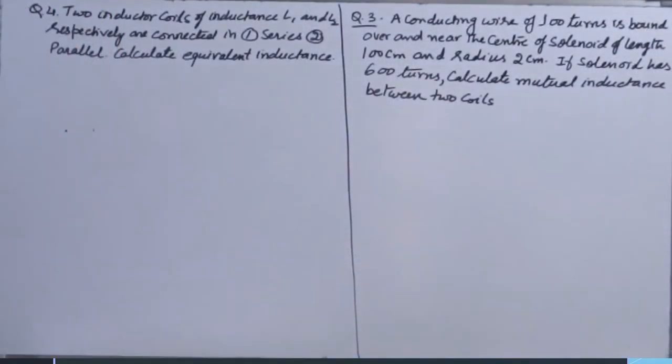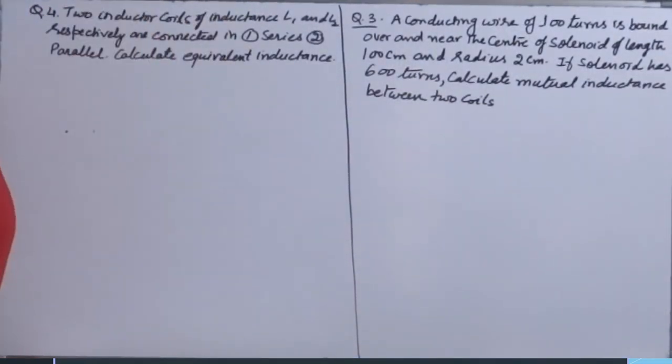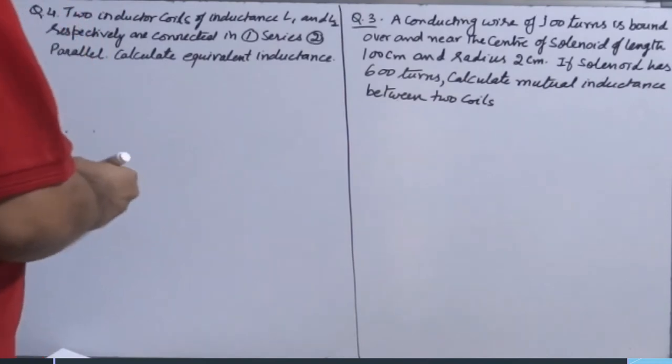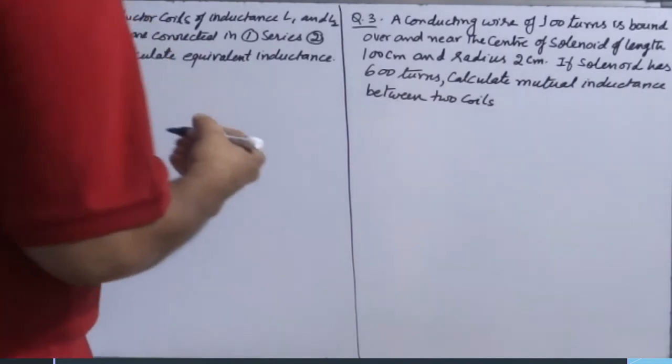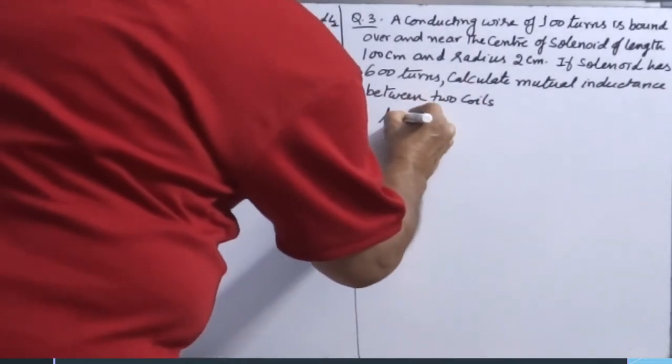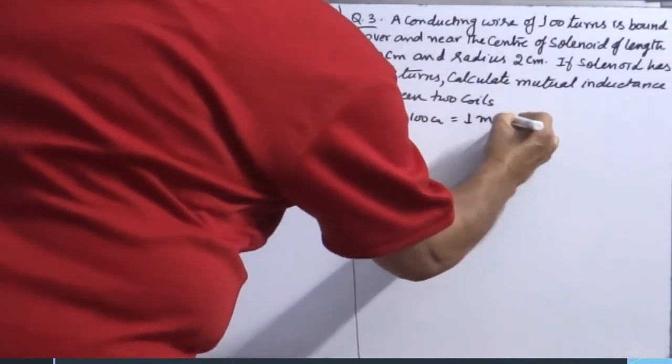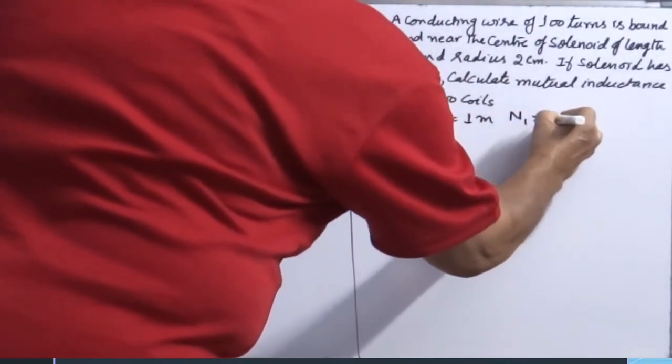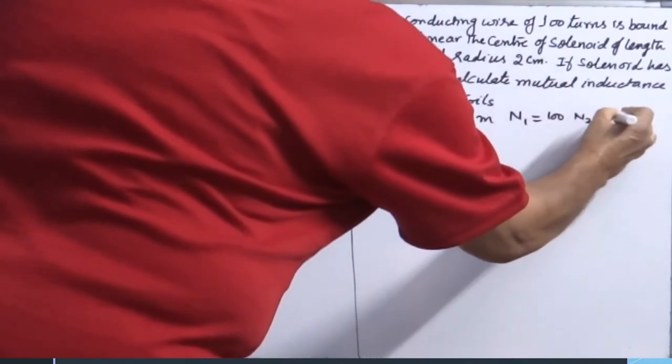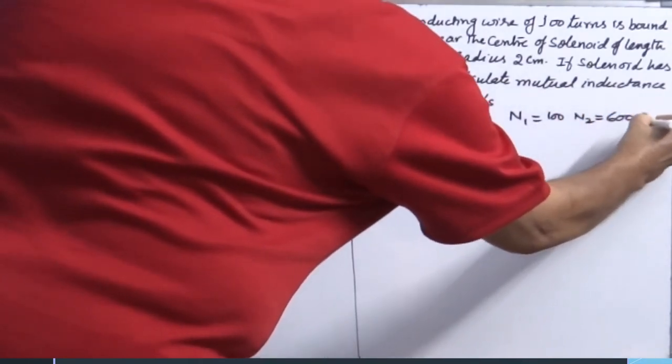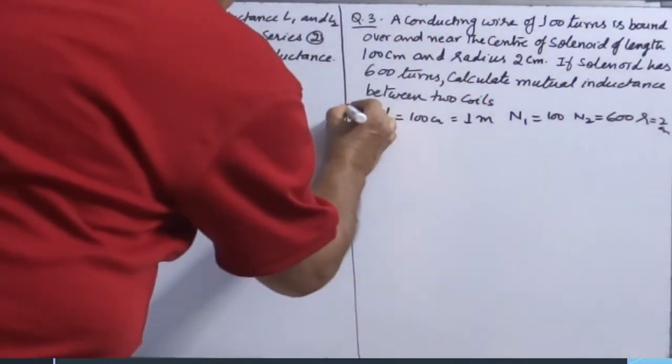Two more questions. A conducting wire of 100 turns is bound over and near the center of the solenoid of length 100 cm. So what is given: L is 100 cm, that equals 1 meter, N1 is 100, N2 is 600, R is 2 cm. What we have to find?